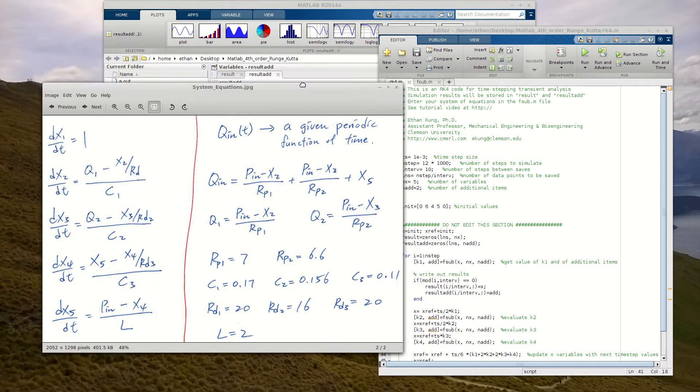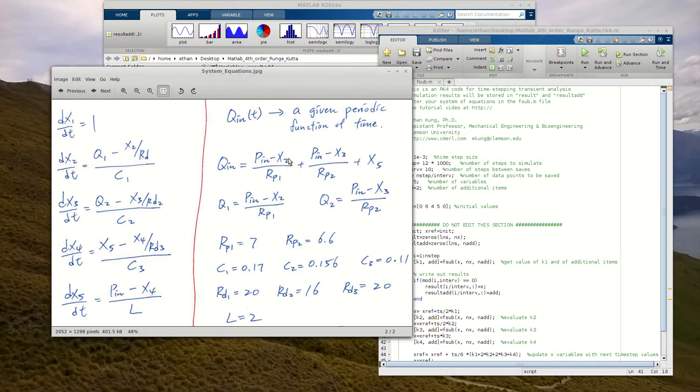The way that we're going to learn how to use this MATLAB code is basically by going through an example. This is the example system of equations we're going to use. These equations describe the behavior of an electrical circuit, which I explained in a previous video. If you're interested in where these equations come from, I've included a link to that video in the description. But for now, we're just going to accept these equations as they are and learn how to solve them with this MATLAB code.